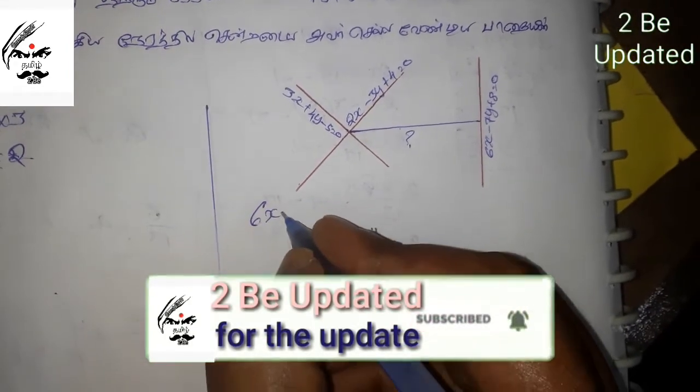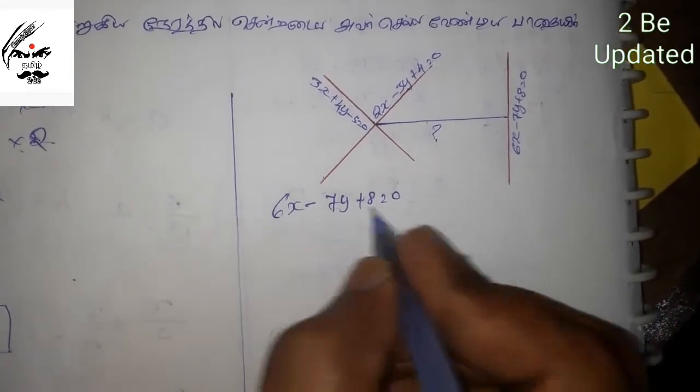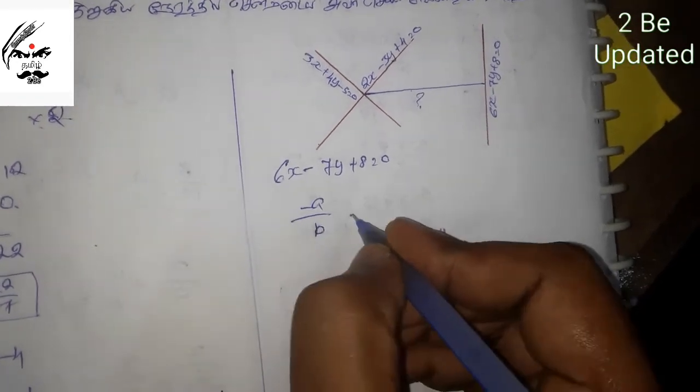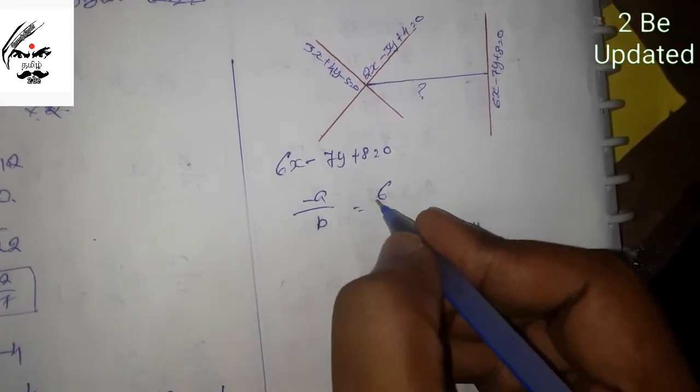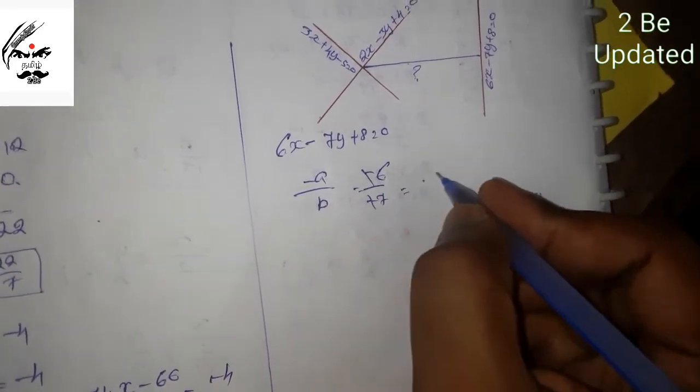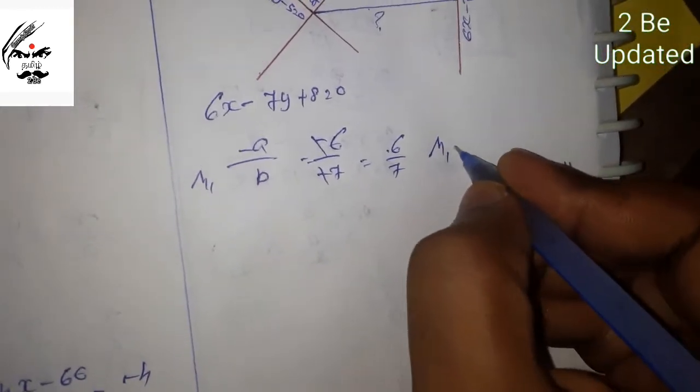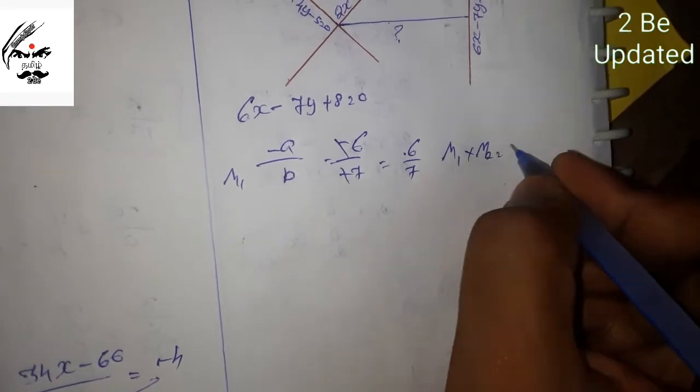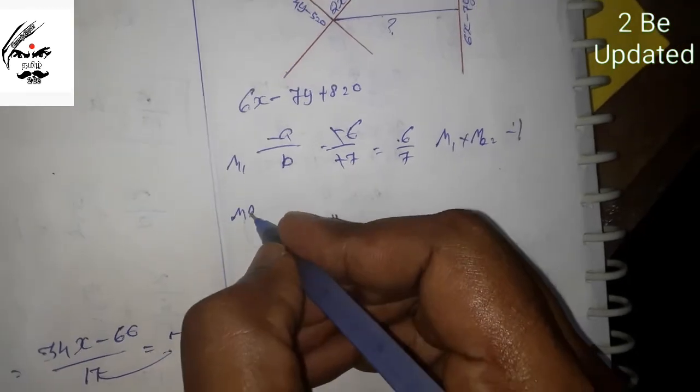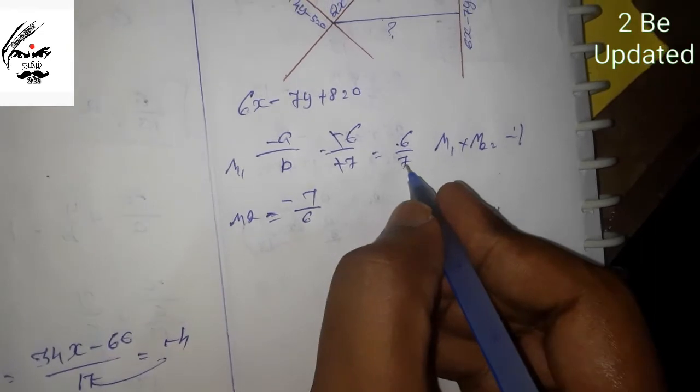For the equation 6x minus 7y plus 8 equal to 0, the slope formula is minus a by b. So m1 is minus 6 divided by minus 7, which is 6 by 7. For perpendicular lines, m1 into m2 is equal to minus 1. So m2 is minus 7 by 6.